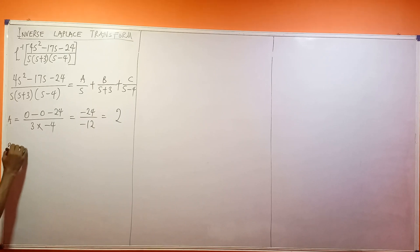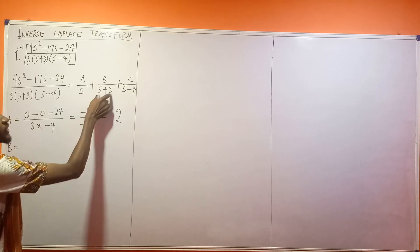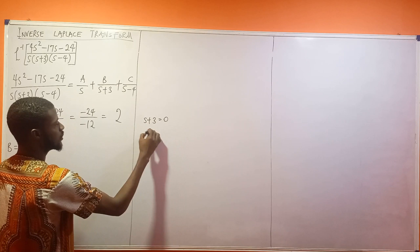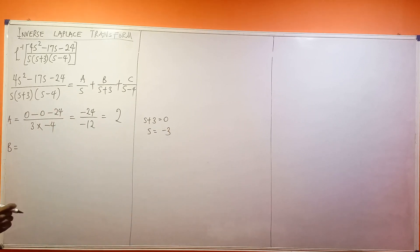B is going to become, what is at the bottom of B? S plus 3. So I'm going to say let s plus 3 be equal to 0, so s then becomes minus 3. Anywhere you see s here is going to be minus 3. This is s, minus 3 squared is 9, so this is 4 times 9.